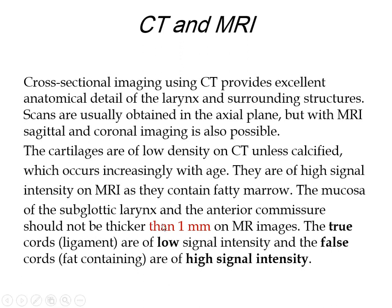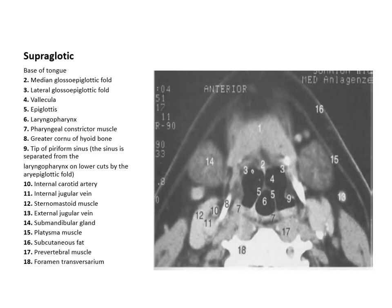On MRI, the true vocal cords are of low signal intensity while the false vocal cords are of high signal intensity. The true cords are muscle, giving soft tissue signal intensity, while the false cords contain fat, giving high signal intensity on T1.